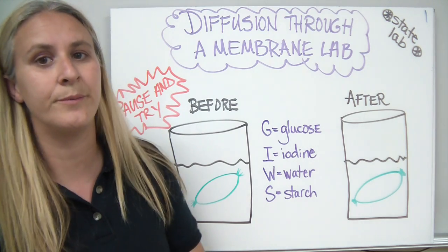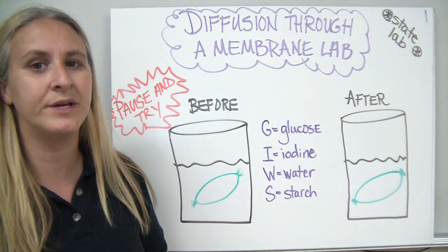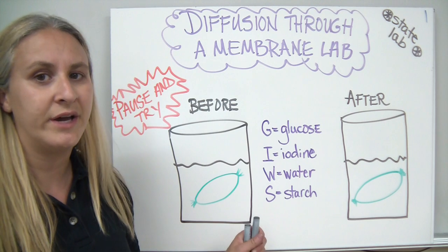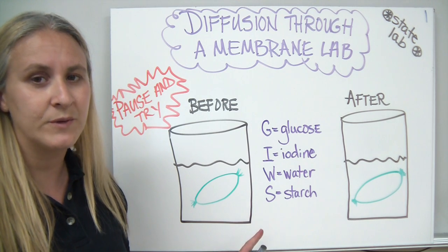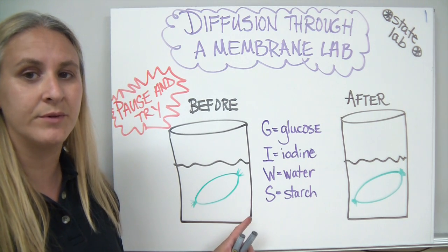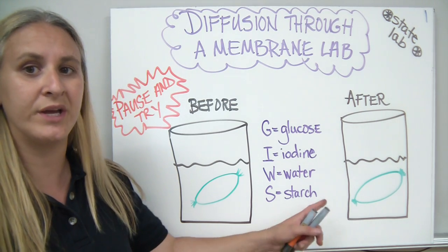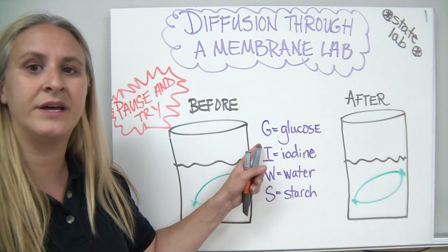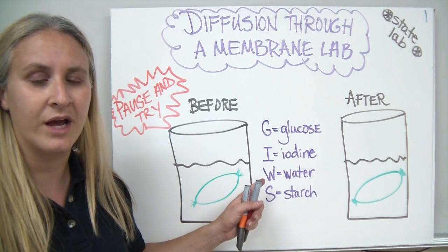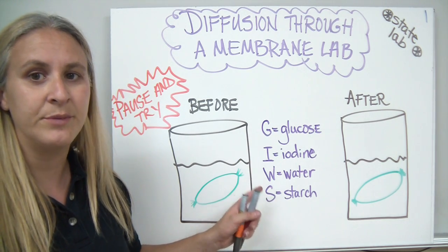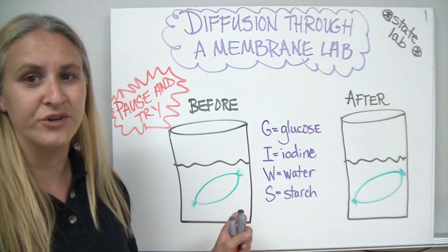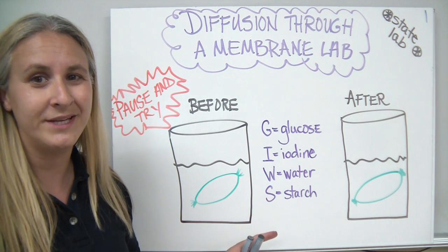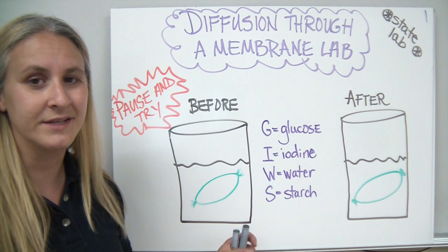Today we're going to talk about the diffusion through a membrane lab that we completed in class. On your handout, I'd like you to label the before and after situations using the letters G for glucose, I for iodine, W for water, and S for starch. You may want to color code it for yourself to make it a little bit easier to see things.